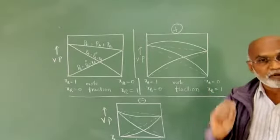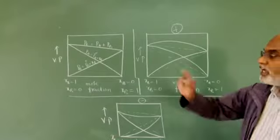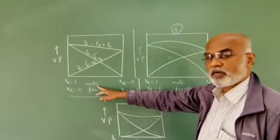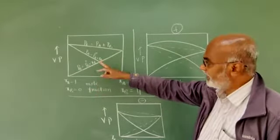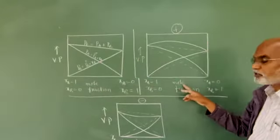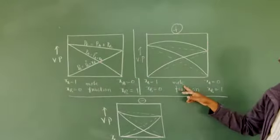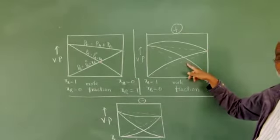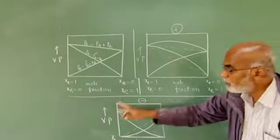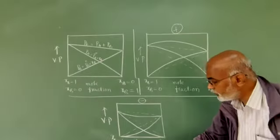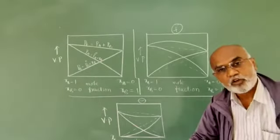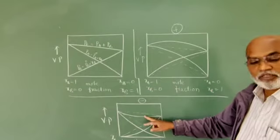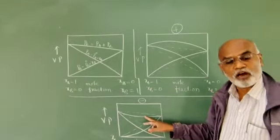So this is a brief about the vapor pressure–composition curve of an ideal solution, the vapor pressure–composition curve of a non-ideal solution which shows positive deviation from Raoult's Law, and the vapor pressure–composition curve of a non-ideal solution which shows negative deviation from Raoult's Law.